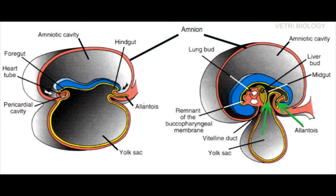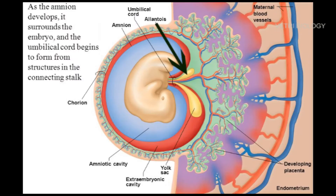The allantois is an extension of the posterior wall of the yolk sac. It forms a small out-pocketing at the caudal end of the yolk sac. This pocket is made up of embryonic tissue. The allantois is the structural base for the umbilical cord.